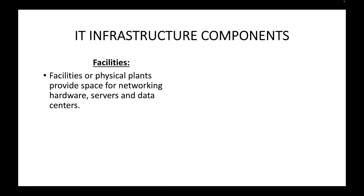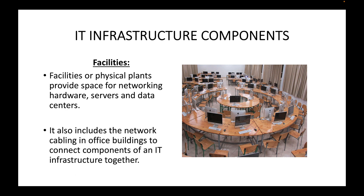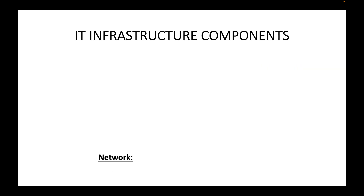In addition, we have facilities — the physical places that provide the necessary space to run our networking hardware, servers, data centers, and all physical components. To run all these physical components we need locations, and that is where facilities come in. It also includes the network cabling within office buildings to connect components of an IT infrastructure together.